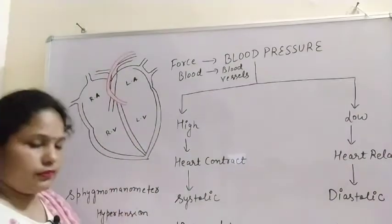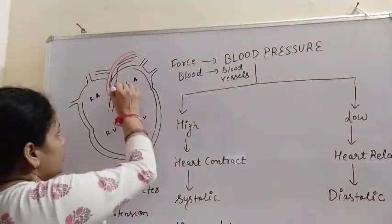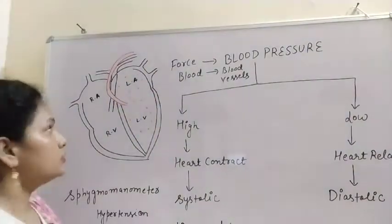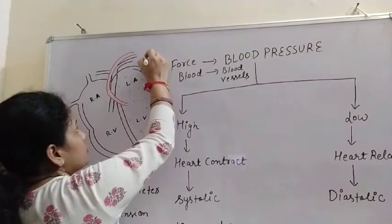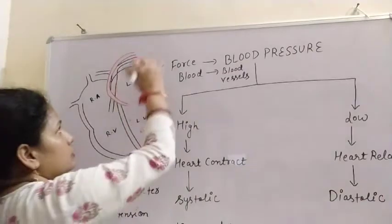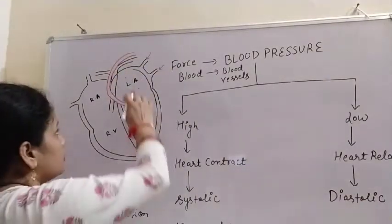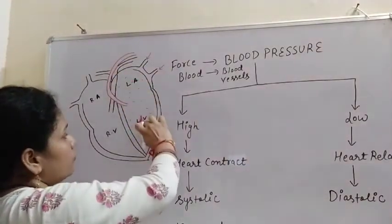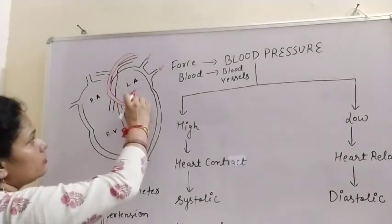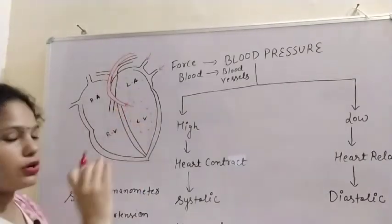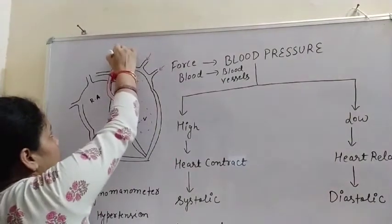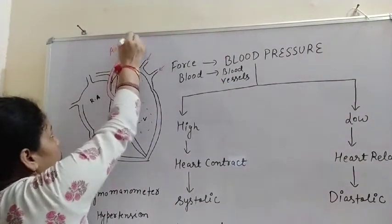And the left part of the heart carries the oxygenated blood, so I am marking it with red here. Because the blood from the lungs after oxygenation comes into the left auricle by the pulmonary vein. Then that goes into the left ventricle. And here, only one pathway is present — blood is supplied to the different parts from here.